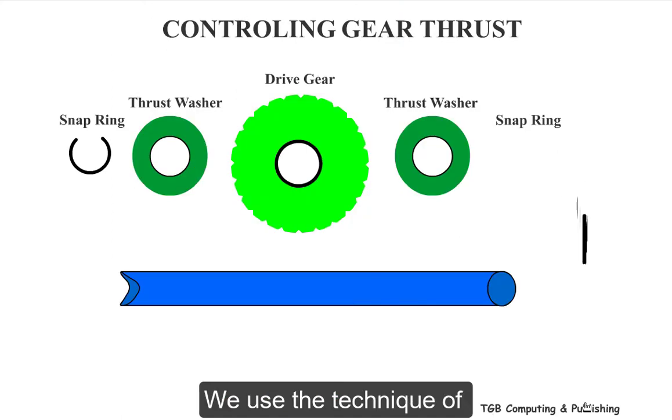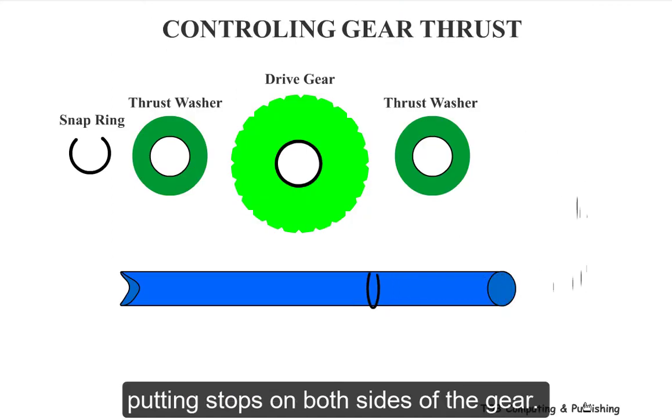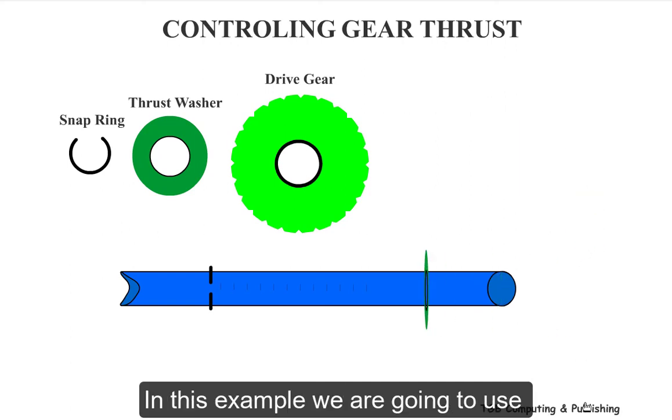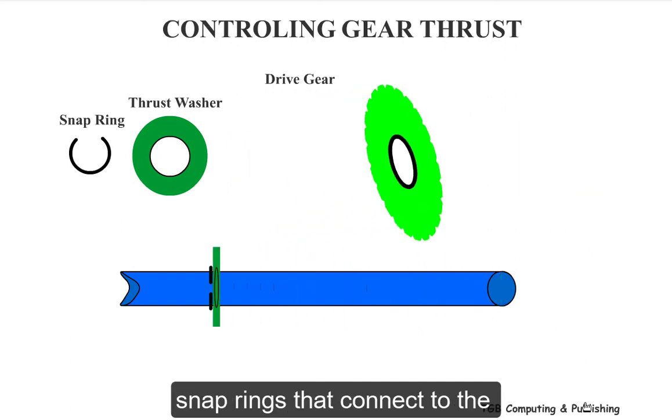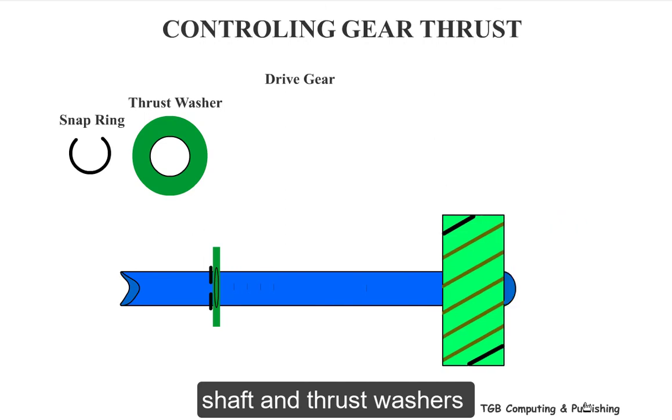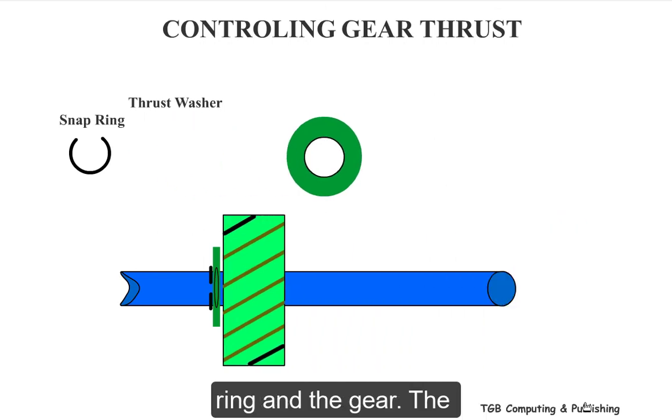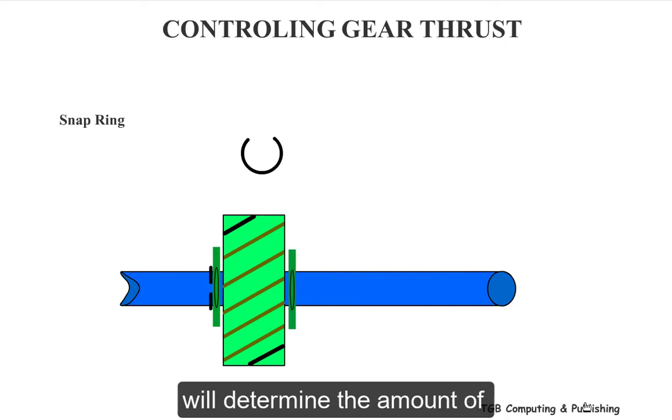We use the technique of putting stops on both sides of the gear. In this example, we are going to use snap rings that connect to the shaft and thrust washers will be placed between the snap ring and the gear. The clearance of the thrust washer will determine the amount of movement on the gear.